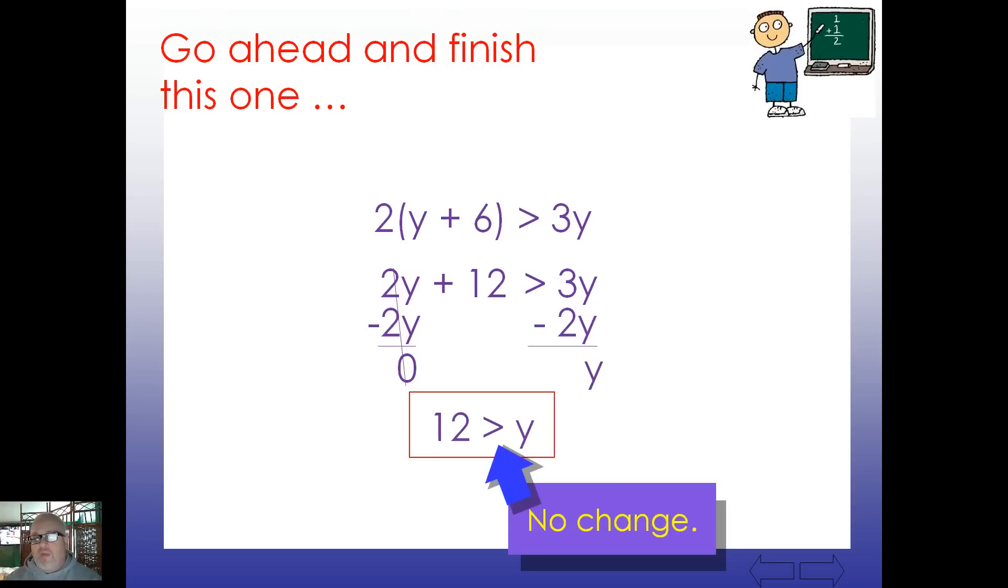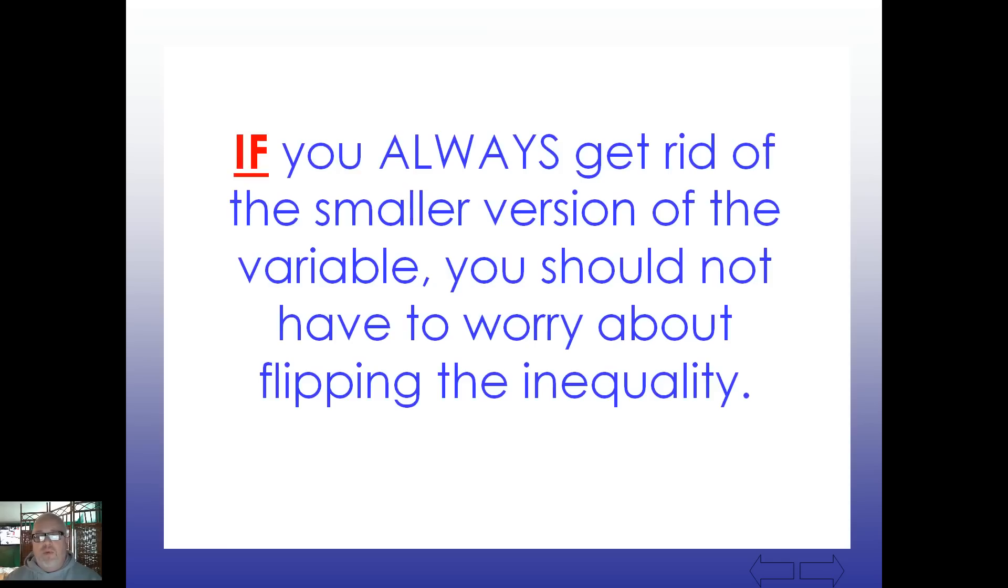And why is that? How come we haven't had to flip that inequality at all? Well, if you always get rid of the smaller version of the variable, you really shouldn't have to worry about flipping the inequality. So try to keep that in mind. There's no hard and fast math rule about which one to subtract or add or whatever, but just from experience, get rid of the smaller one, things go pretty smooth.